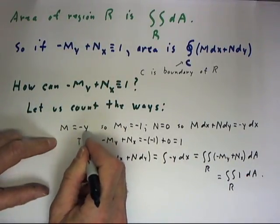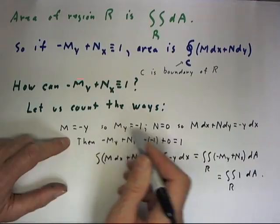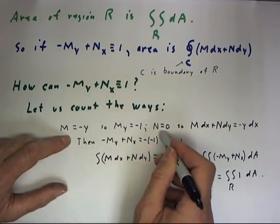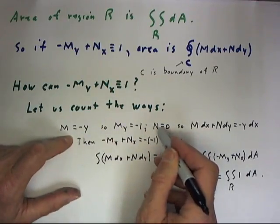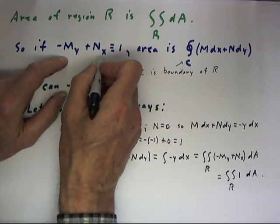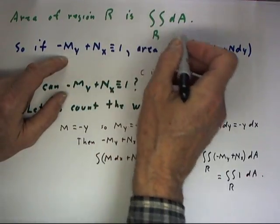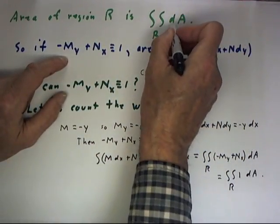So if M equals -Y, it should be clear then, and N equals 0, then we get -M_y + N_x equals 1, and this integral gives us this area.